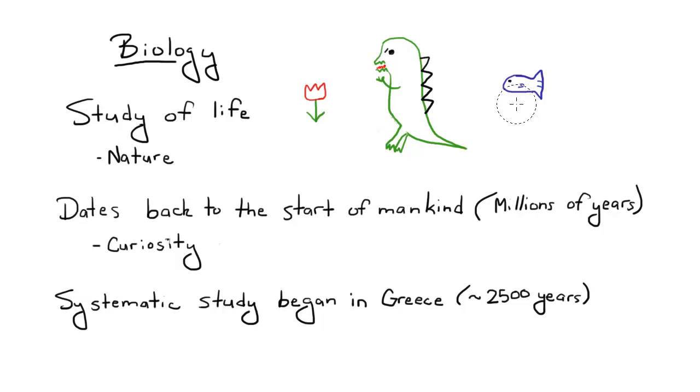Biology dates back to the start of mankind, millions of years ago. People have always been curious about what's around them. They want to understand the animals and plants around them, how they act, and how they could benefit mankind. But the systematic study began in Greece about 2,500 years ago.